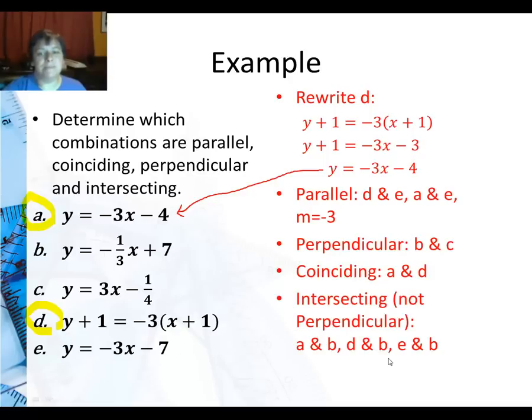Then intersecting, but not perpendicular. Well, a and b, because they're not perpendicular and they're not parallel. D and b, same thing, and e and b are not perpendicular nor are they parallel. And technically I could say d and c are not perpendicular or parallel. So I could have added that on.